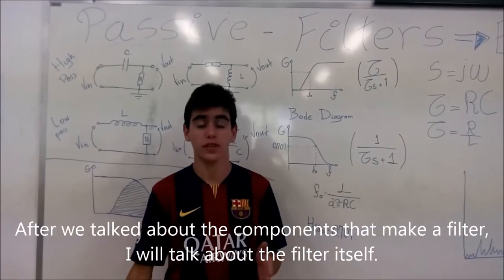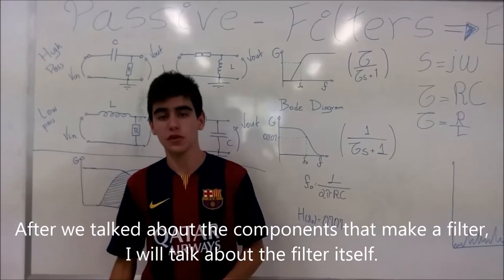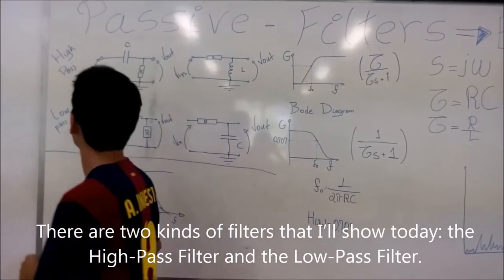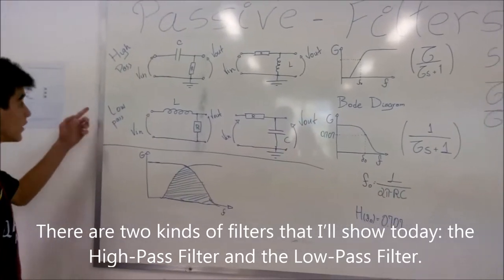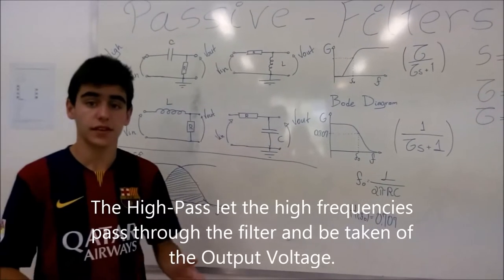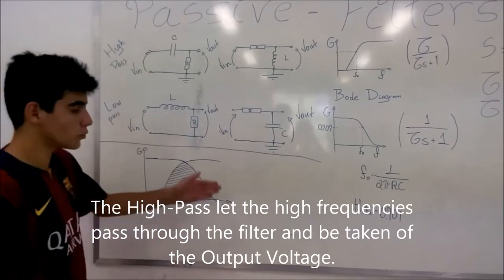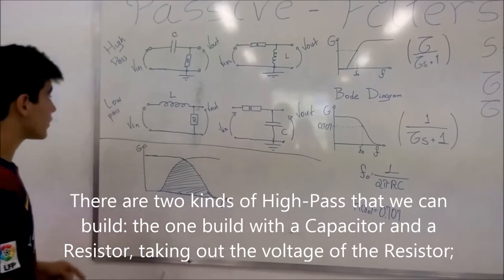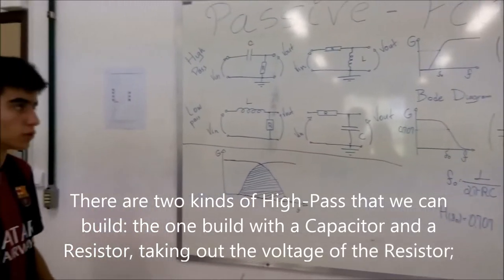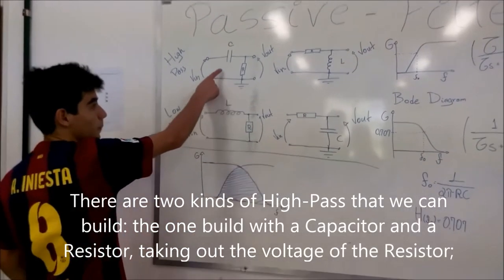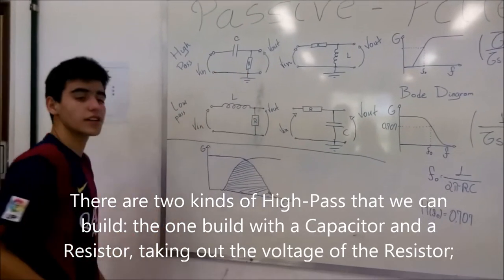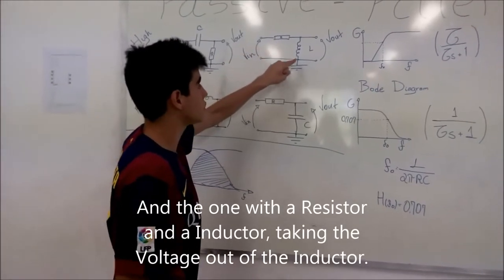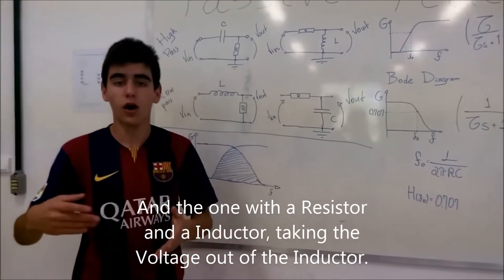After talking about the components that build a filter, I will talk about the filter itself. There are two kinds of filters that I will show today. The high-pass filter and the low-pass filter. The high-pass let the high frequencies pass through the filter and be taken off the output voltage. There are two kinds of high-pass filter. The ones built with a capacitor and a resistor taking off the voltage of a resistor, and the one built with a resistor and an inductor taking the voltage out of the inductor.